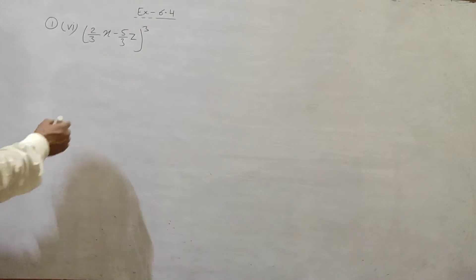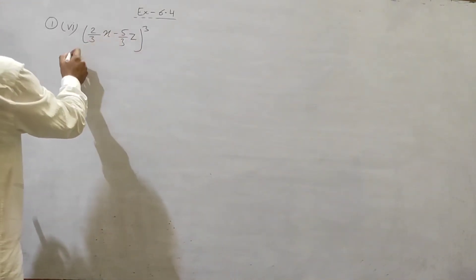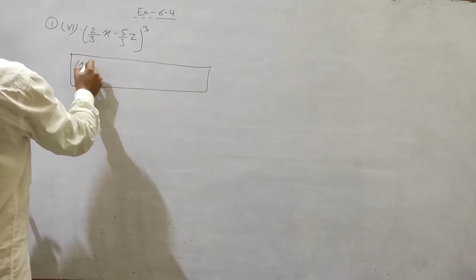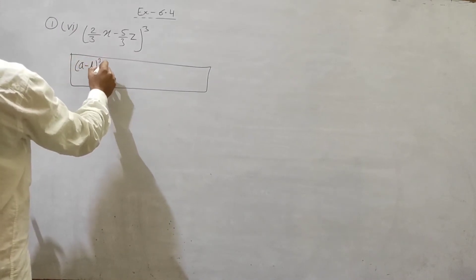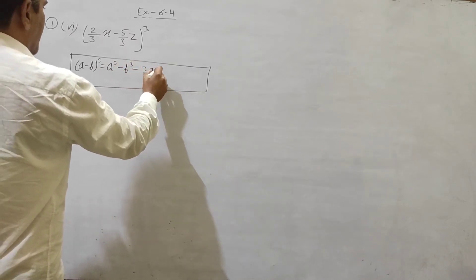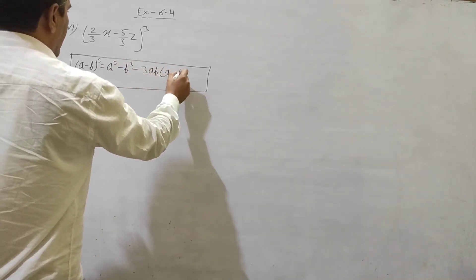Continue by using a minus b whole cube property. Use a minus b whole cube: a cube minus b cube minus 3ab multiply with a minus b.